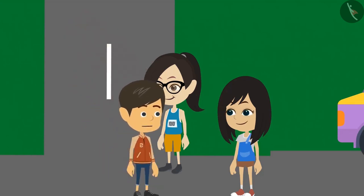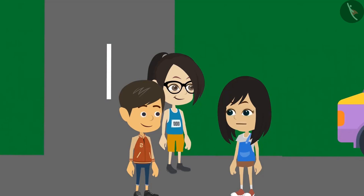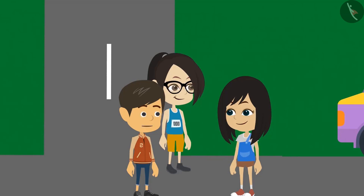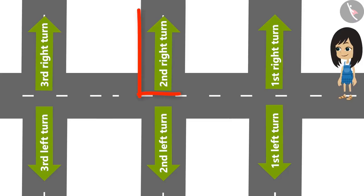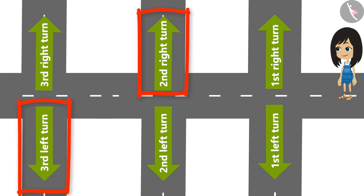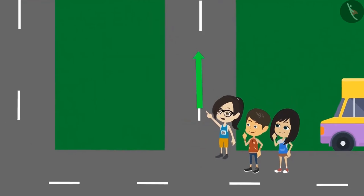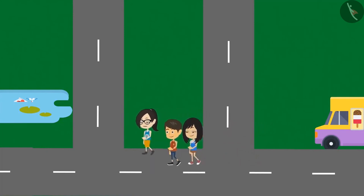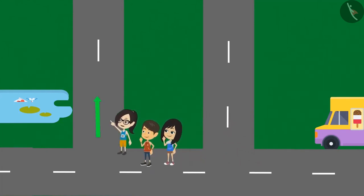Please tell me. If we say second turn, it means we have to leave the first turn and take the second. Similarly, if we say second right turn, then we have to leave the first right turn and take the second right turn. Then you should say leave first right and take second right. Yes, we can say that, but it is too long. Therefore, we simply say take second right turn, third left turn, etc. Look, this is the first right turn — we will not turn here. We will go straight and turn on the next right.